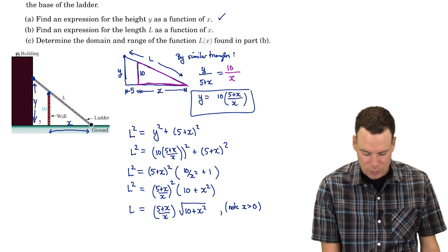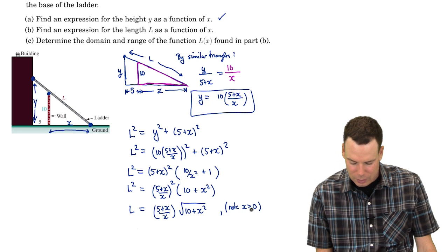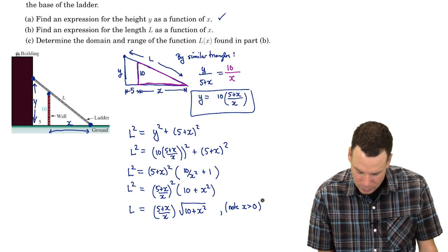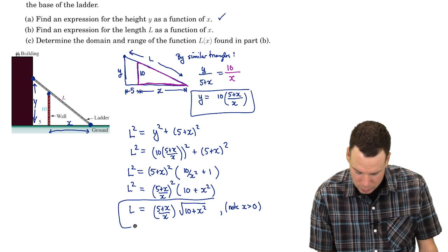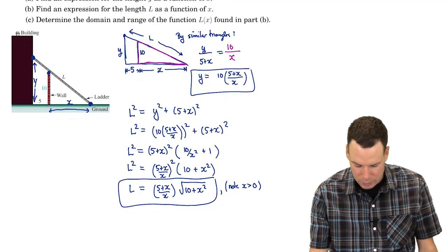So we'll just note here that X is positive. X is the distance the base of the ladder is to the wall so that's a positive value. So I'm just noting that X is positive so when I took the square root of the X² I didn't have to introduce absolute values. And there we go. There's our function L of X.